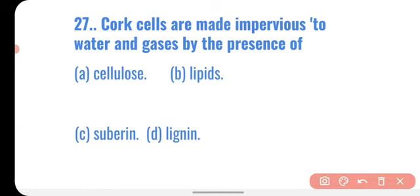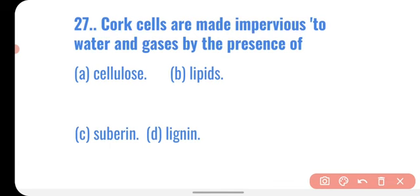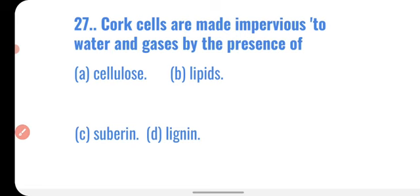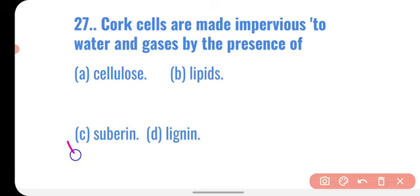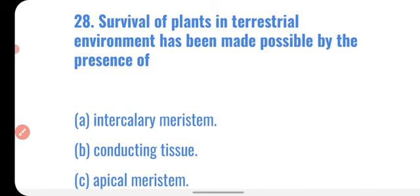Question twenty-seven: cork cells are made impervious to water and gases by the presence of — cork cells found in the bark become impervious to water and gas by the presence of a substance called suberin. The cells of the bark contain suberin, which blocks the passage of water and gas. Correct option: suberin.